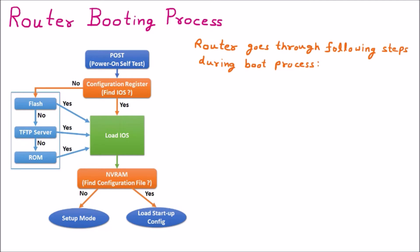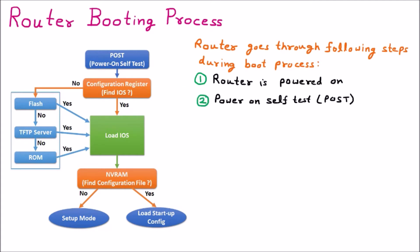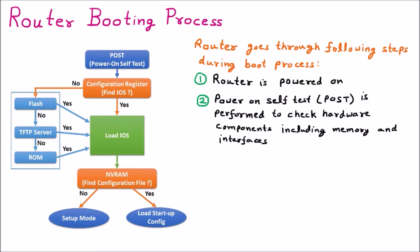Step one: the router is powered on. Step two is POST — Power On Self Test. This power on self test is performed to check the hardware components, including the memory and the interfaces. As we can see in the diagram, the very first step is POST. With the help of POST, it checks the hardware components, memory, and interfaces to verify that everything is okay before proceeding further.